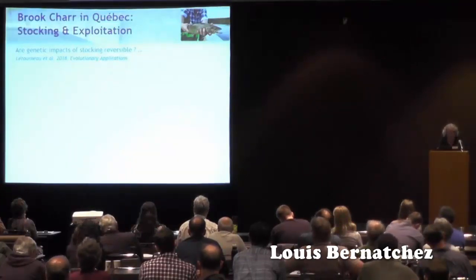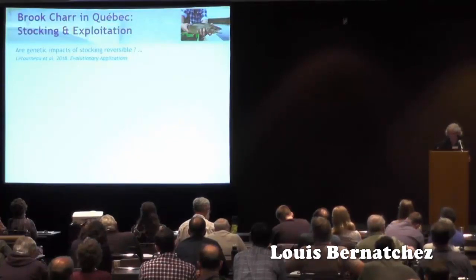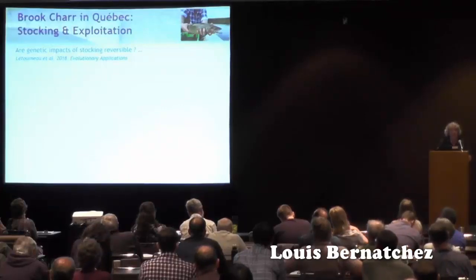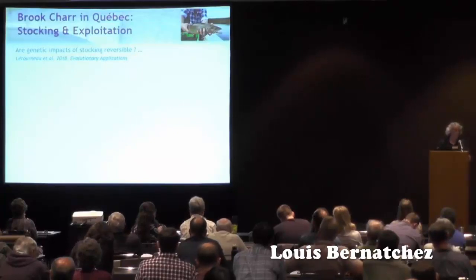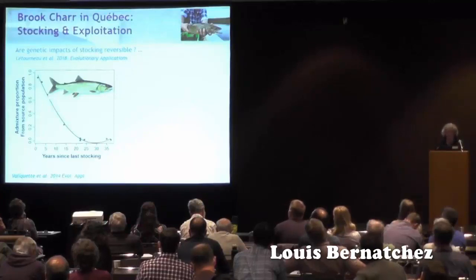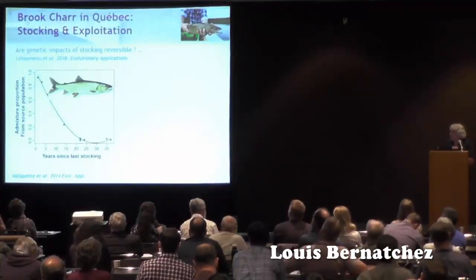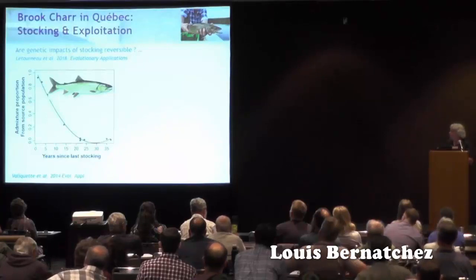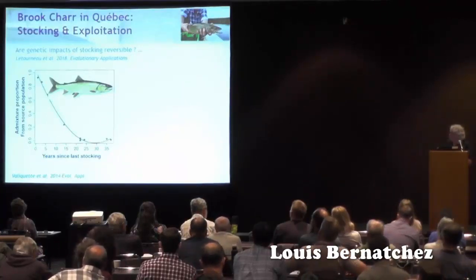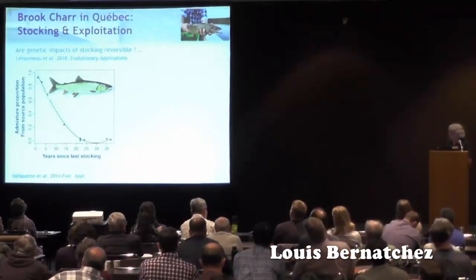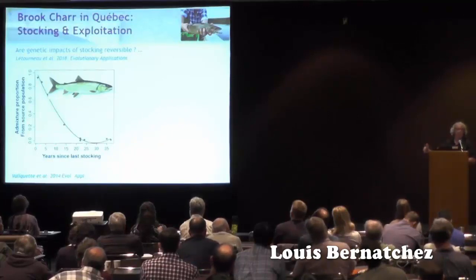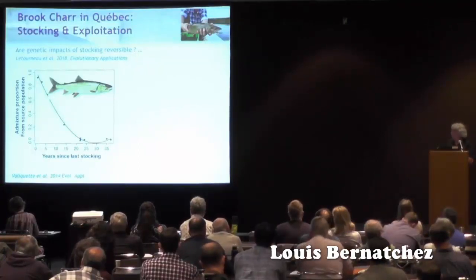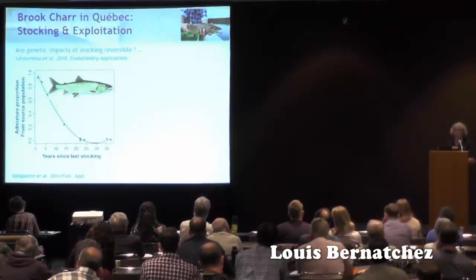The second aspect of stocking impact I wanted to present was just recently published in Evolutionary Applications: testing whether the genetic impact of stocking could be reversible. The reason we started that study was that some work we had done on stocking in lake trout — not the purpose of the study — showed as a side observation that the admixture proportion from stocked fish was decreasing over time with the number of years since stocking was stopped in a given lake. This suggested that perhaps the genetic background of stocked fish was vanishing over time.